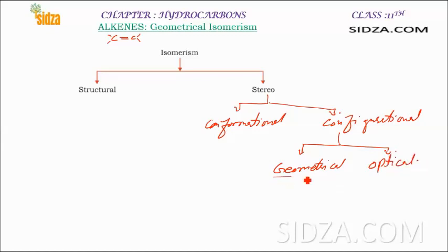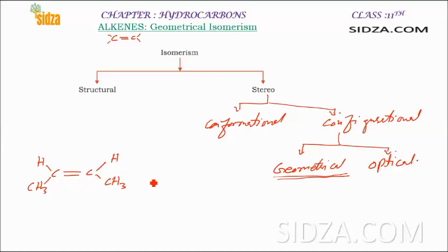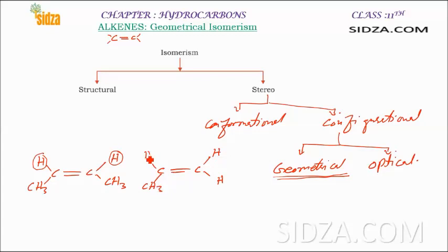In this video we will only talk about geometrical isomers in alkenes. In alkenes there is a carbon-carbon double bond, and around this double bond we can have different arrangements of groups. For example, if we have hydrogen and methyl on each carbon of the double bond, we can arrange them so that the hydrogen atoms are on the same side, or put them on opposite sides with methyl groups also on opposite sides. These are the geometrical isomers.